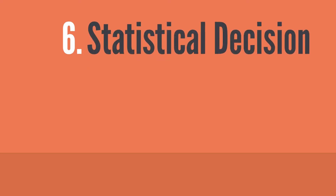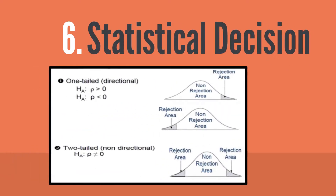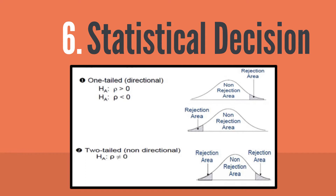The sixth step in hypothesis testing is making the statistical decision. If the calculated test statistic from step 5 is larger than the rejection point from step 4, we reject the null hypothesis in favor of the alternative hypothesis.